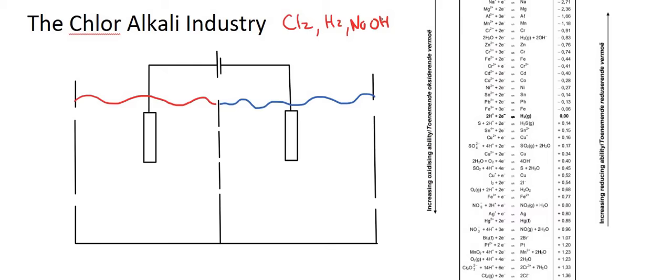The process starts by pumping in some brine over here. Now, what is brine? Brine is concentrated sodium chloride. So, NaCl. Now, we know that NaCl is going to actually dissolve or break up into its components, which is Na plus and Cl minus.